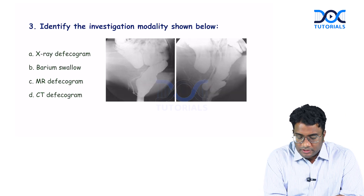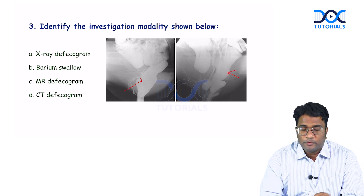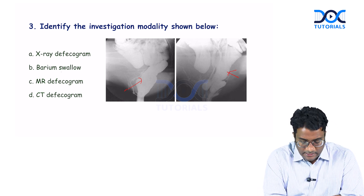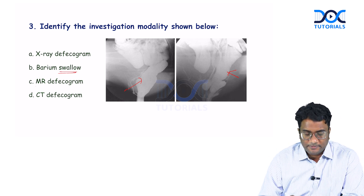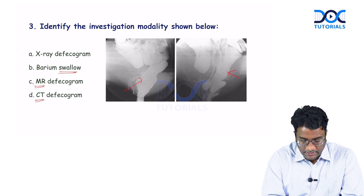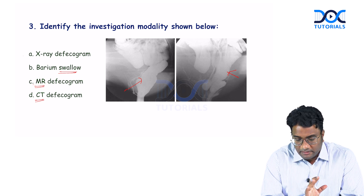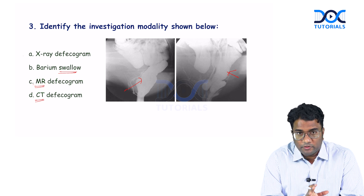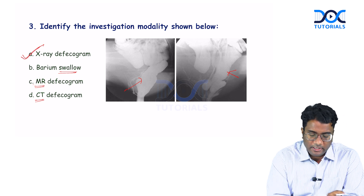The next question: identify the investigation modality shown below. They give you a barium image showing the rectum and the anal canal. Barium swallow shows the esophagus. On MR, bones would be black; on CT, bones would be white. This is an X-ray based procedure where barium is given and the patient is asked to defecate — the image is obtained at the time of defecation. This is X-ray defecogram.